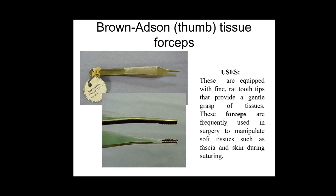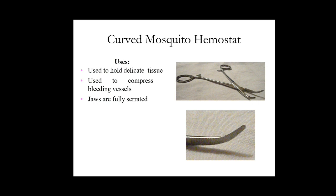The next one is the curved mosquito hemostat. It is mainly used to hold delicate tissue — very soft structures like blood vessels and mucous membranes. They are also used to compress blood vessels when there is severe bleeding or a cut in a blood vessel, clamping that blood vessel with the mosquito hemostatic forceps. Even during surgeries, when major arteries are cut, they are clamped with the mosquito hemostatic forceps.